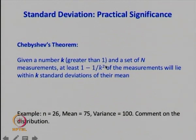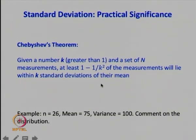If I substitute k equal to 2, that becomes 1 minus 1/4, which is 75 percent. So 75 percent of the measurements are expected to lie within two standard deviations of the mean, between mu minus 2 sigma and mu plus 2 sigma.